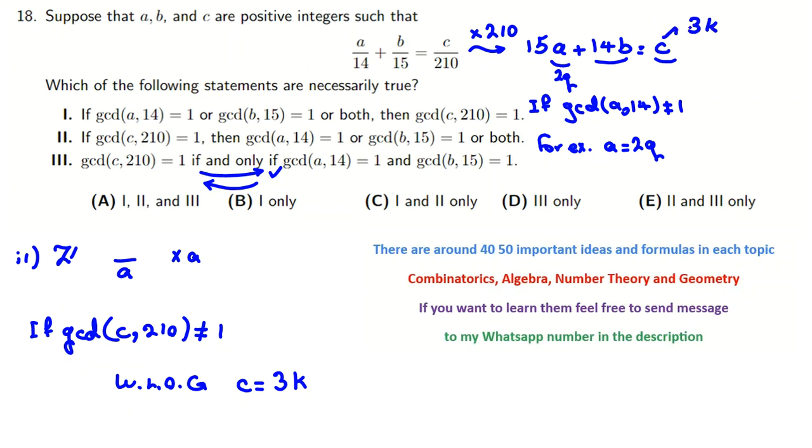So, if, for example, GCD of C and 210 is not 1. Without loss of generality, for example, suppose C is, for example, 3K. So, C is 3K. That prime, one of them has that prime, like this. This one is multiple of 3, 15. So, multiple of 3, multiple of 3. So, 14B also multiple of 3. Because if you take it to right side, right-hand side will be multiple of 3. Because this and this, both of them are multiple of 3. So, 14B multiple of 3. So, B should be multiple of 3.